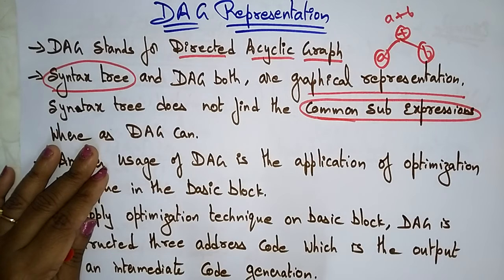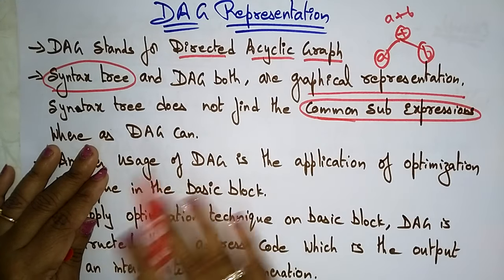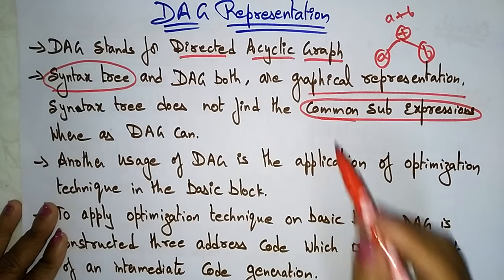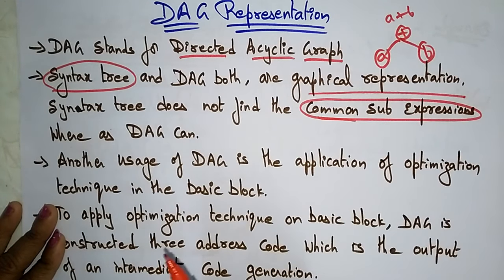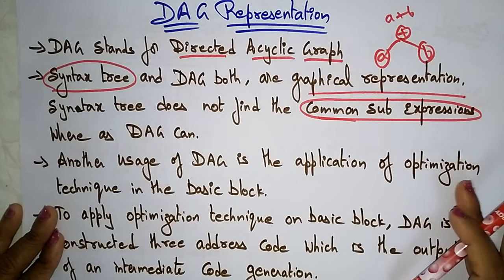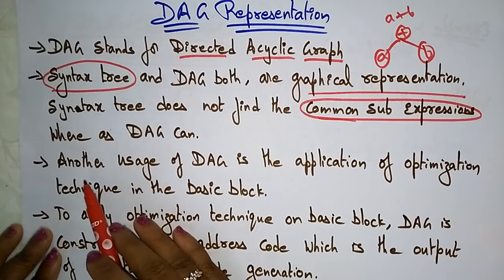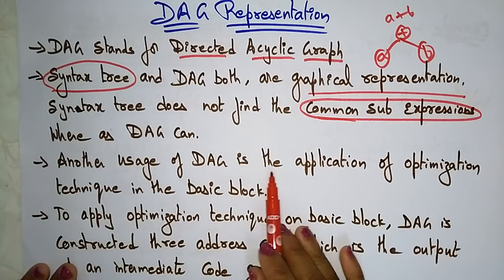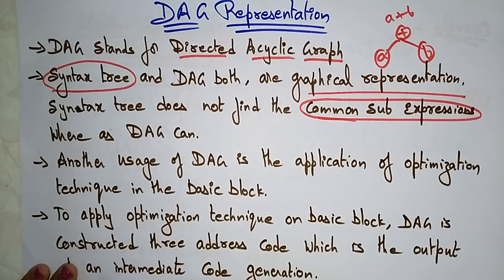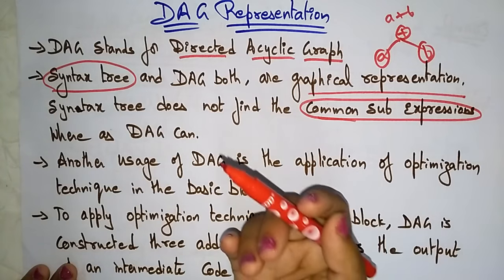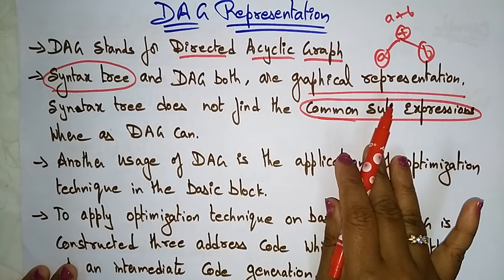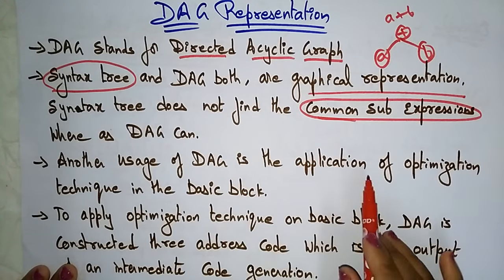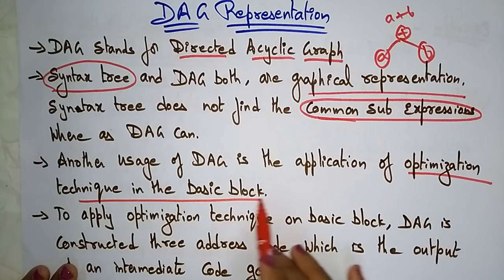By finding common sub-expressions, the DAG reduces tree size — the syntax tree cannot do this. If you see the examples you will get a clear idea of what common sub-expressions are. First, let me explain what a DAG is, what the algorithm is, and another usage of DAG: the application of optimization techniques in the basic block.